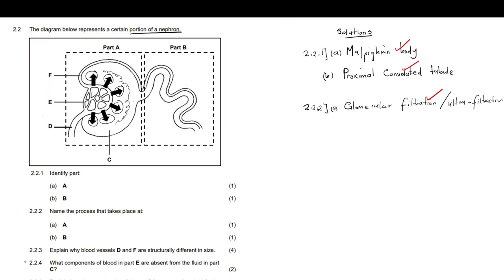Part B of question 2.2.2 asks: name the process that takes place at part B. We said part B is the proximal convoluted tubule. The process that takes place there is tubular reabsorption. This is where important nutrients move from the proximal convoluted tubule back into the surrounding blood vessels.